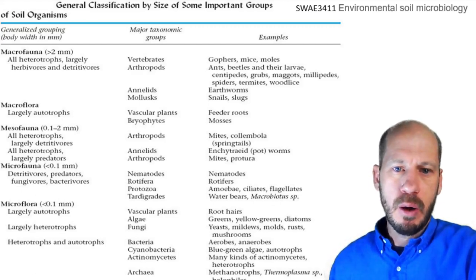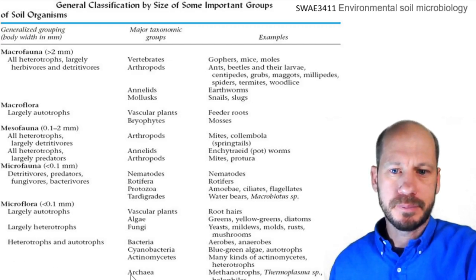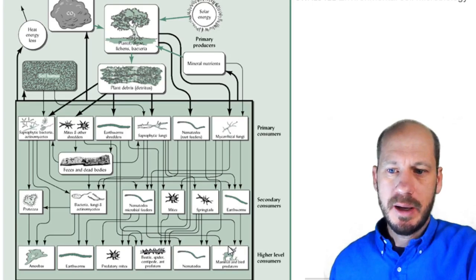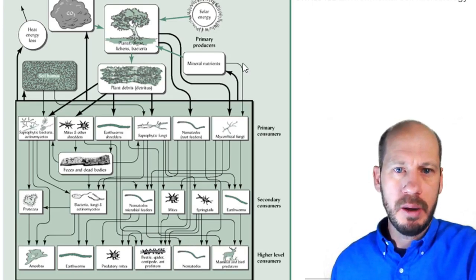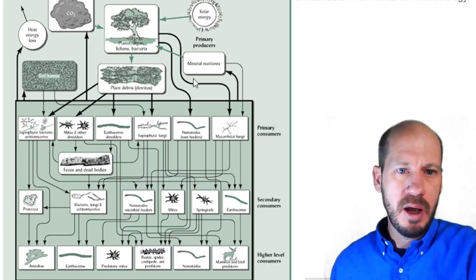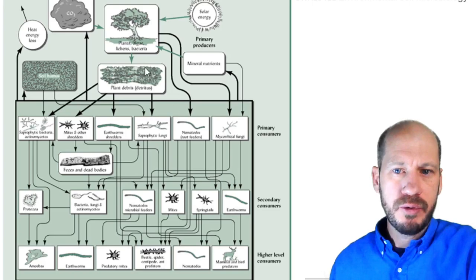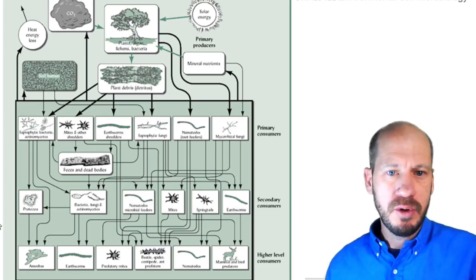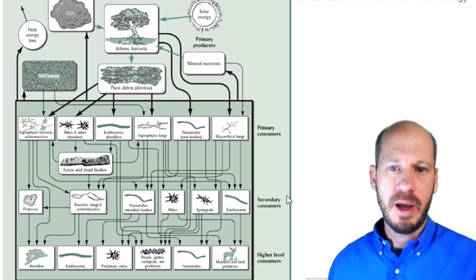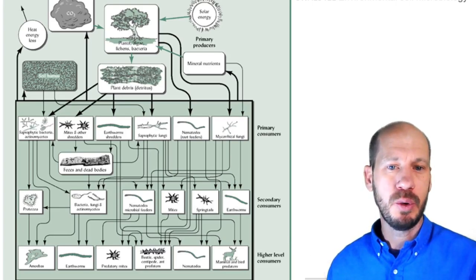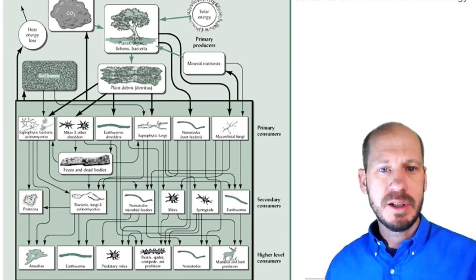This is an example of a food web representation where you have the autotrophs in the system fixing carbon from the atmosphere. After these autotrophs fix the carbon, there is a whole sequential decomposition, and the primary decomposers serve as food for the predators in the next layers of the food web. This food web is highly important for maintaining a dynamic equilibrium of diversity in soil systems.